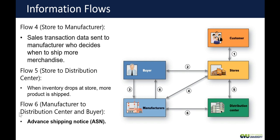Information flow five, from the store to the distribution center, is very powerful. If stores tell the distribution center what they sold and you can get a truck every single day — which is what Walmart does — every Walmart store is within one day's drive of a distribution center, so they send a truck every day and every store receives trucks six days a week. That means stores don't need as much back-room storage space, which helps reduce inventory at the store level and drives better gross margins.